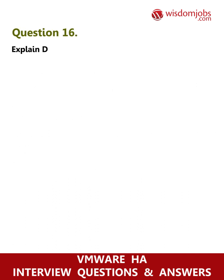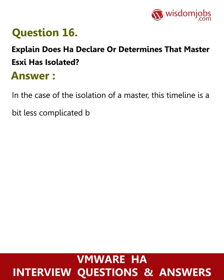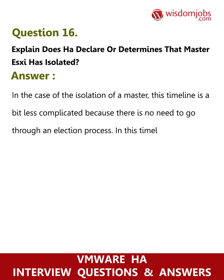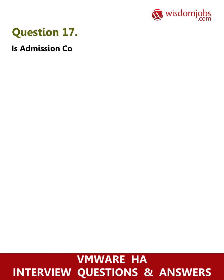Question 16: Explain how HA declares or determines that a master ESXi host is isolated. Answer: In the case of isolation of a master, this timeline is a bit less complicated because there is no need to go through an election process. In this timeline, 's' refers to seconds: T0 — isolation of the host master; T0 — master pings isolation addresses; T5s — master declares itself isolated and triggers isolation response.